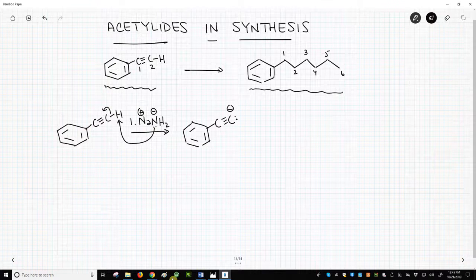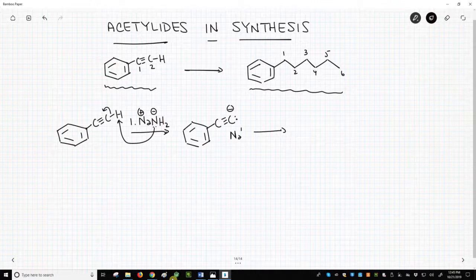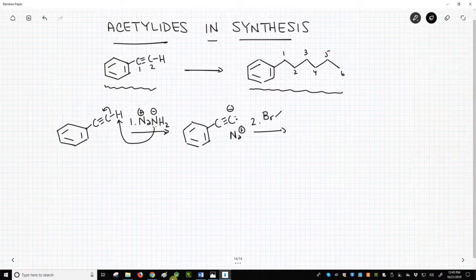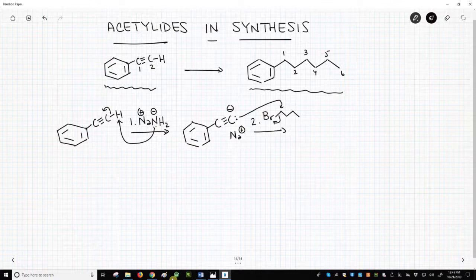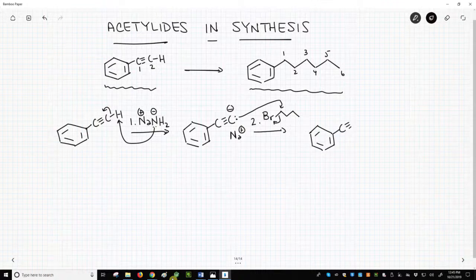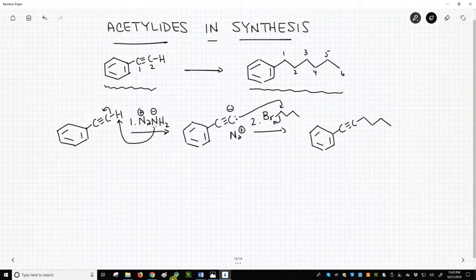We'll then add our alkyl halide. Let's give it a sodium plus in there, too. We'll add our alkyl halide. Remember, we need four carbons. We'll add butyl bromide. It's a nice primary halide to react with our basic, yet nucleophilic acetylide. That's step two. We get our substitution. Let's get our count right. There's our carbons.